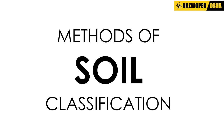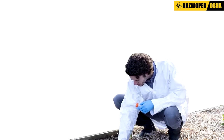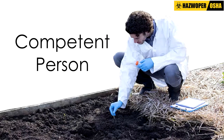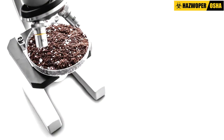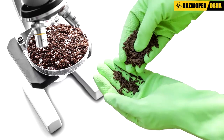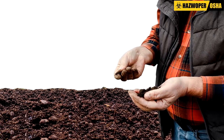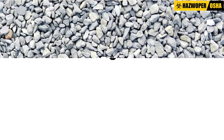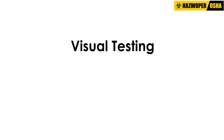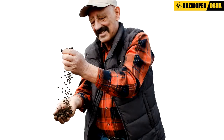Methods of soil classification: the competent person on site is responsible for determining soil types. There are two basic methods for soil classification: visual testing and manual testing. The classification of each soil type requires at least one visual analysis and at least one manual analysis. The only exception is if the competent person wants to designate a soil as Type C, the most unstable type, in which case no testing is needed.